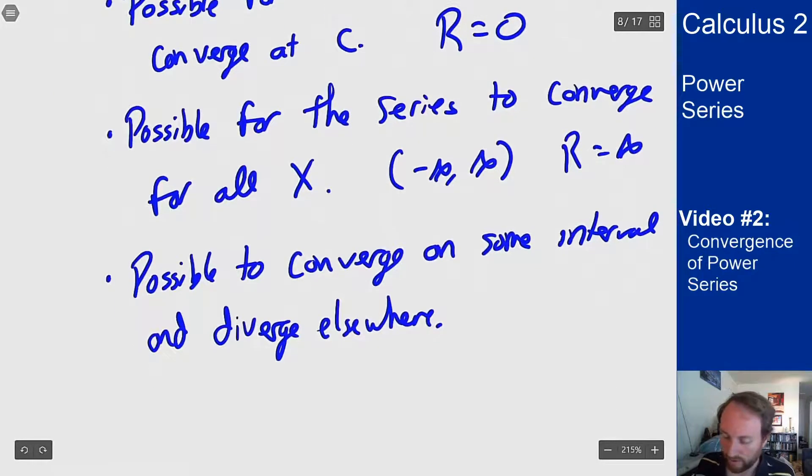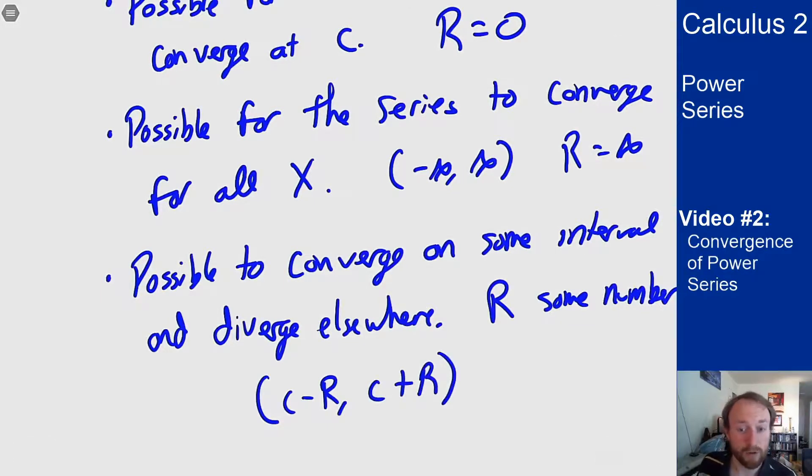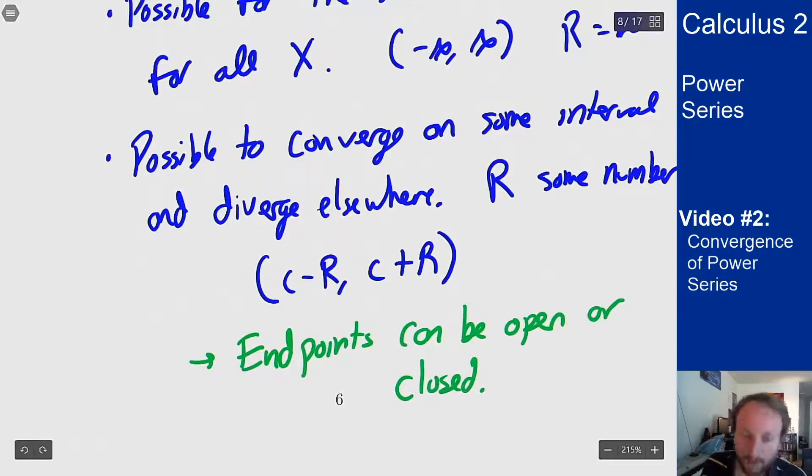In this case we have r being some number and my interval is from c minus r to c plus r, and these endpoints here can be either open or closed. It might converge or diverge at the endpoints and we'll see more about that in a second.